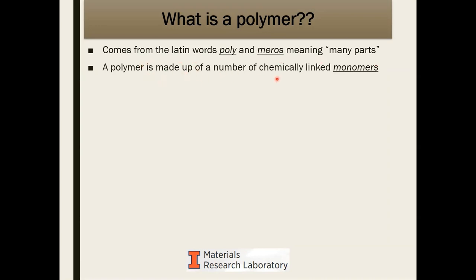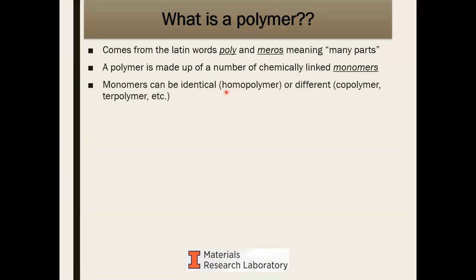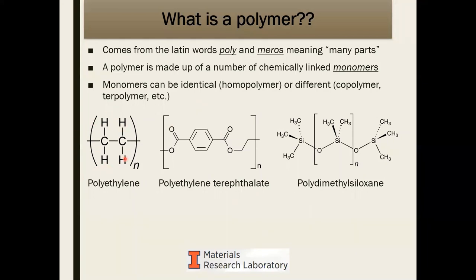How do we make polymers? They're made up of many chemically linked monomers — 'monomer' meaning one. We have a specific molecule that we can chemically react with either itself or other molecules to create a long chain, and that is called a polymer. If the molecule reacts with itself, we call it a homopolymer. If we react monomer A with monomer B, we call it a copolymer. Mixing three monomers gives a terpolymer. Not too many people venture beyond three because things get complicated quickly.